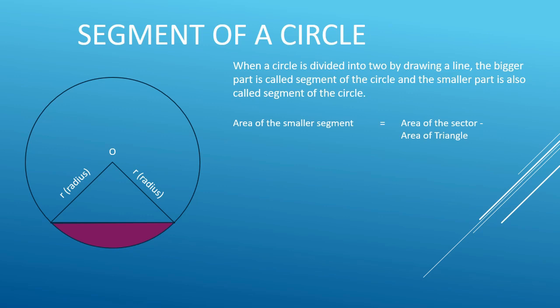Looking at the triangle, you can see the inside angle formed at the radius. We have a triangle within the circle. Looking at the area of the triangle, you can see the area of the sector — this gives us the third area component.